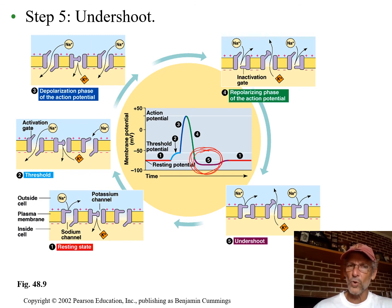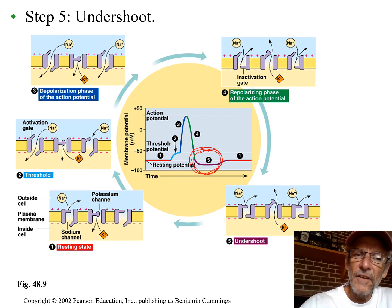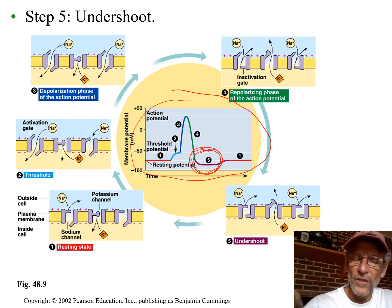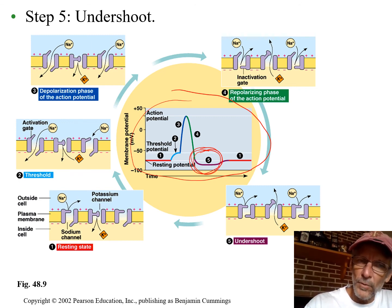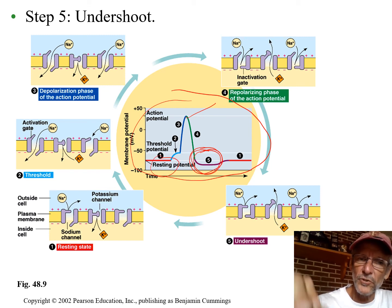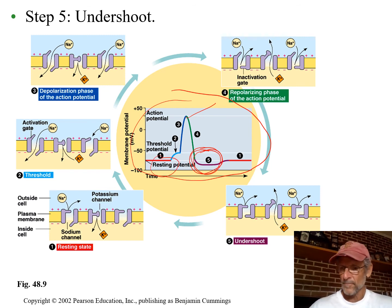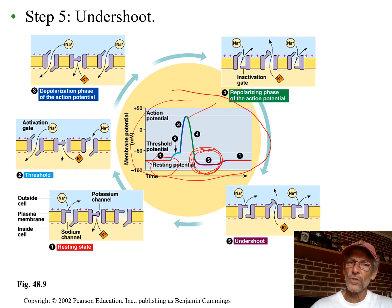Going back to the IB syllabus — if they give you this graph, which is produced by a machine called an oscilloscope, what they will ask you to label is the action potential and the resting potential. Not the undershoot, not the threshold.